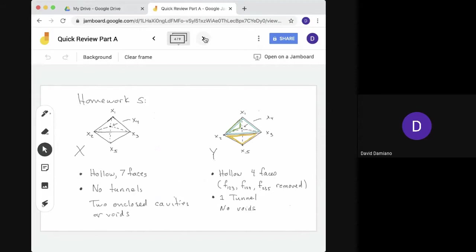This is from homework five, which you just handed in. It's a little more involved example. Here we have X on the left, it's hollow. We have two tetrahedra, one on top, one on bottom. They're glued together along a common face. So we have seven faces. It's hollow, there are no tunnels through it, but it has two enclosed cavities or voids. These are the interiors of the tetrahedra on the top and the bottom. That was problem two on homework five. For problem three, we started with X, but we removed three of the faces: F123, F124, and F235. Here those faces are colored. So you see F123 in the front, that's blue. F124 in the back, that's green. F235 in the front, that's yellow. Those faces are now missing.